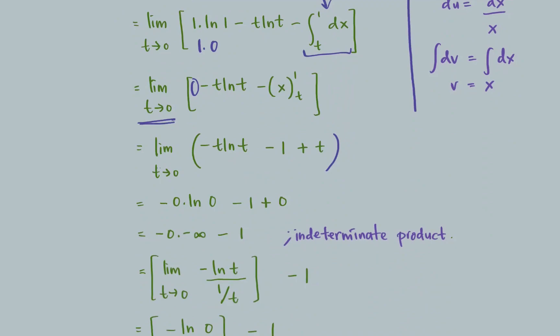Remember here you still need to write limit because we haven't substituted the value of t equal to 0 yet. Then the function will be negative t ln t minus 1 plus t.